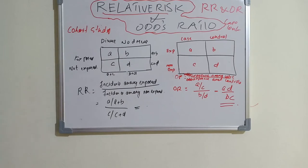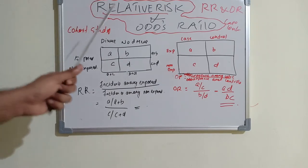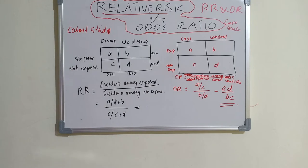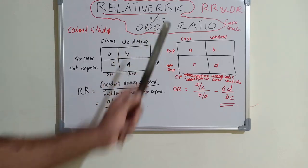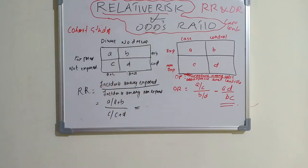Relative risk is always best, but most of the time relative risk estimation is very difficult because of the difficulties of prospective studies. So we usually go for odds ratio. Let's see how to calculate relative risk.